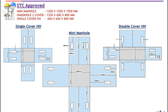Bigger than the two-cover handhole, we have a mini manhole. The dimension is 1.2 meter length and 1.2 meter width — the same square shape — with a depth up to 1.5 meters. One thing common in all three structures — single cover, double cover or mini manhole — each wall has two knockout windows.